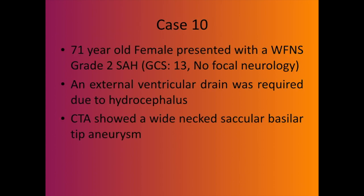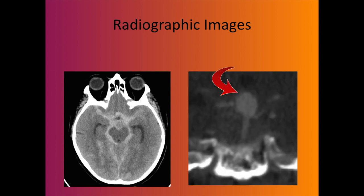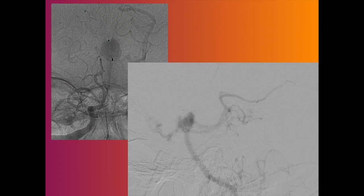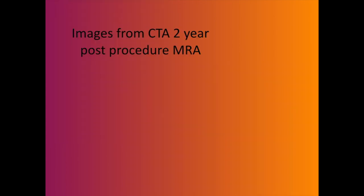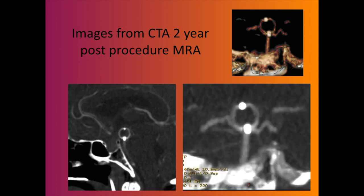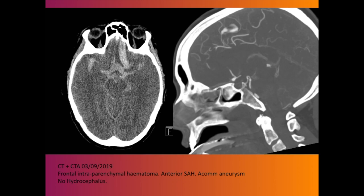On the other hand, for a grade five subarachnoid hemorrhage with a wide neck aneurysm, if you have a WEB you can drop it into the aneurysm and achieve complete occlusion at two years with no flow within the aneurysm — really pretty good. The technology keeps getting better: a young lady with an ACoM aneurysm, slightly irregular shape, but managed to drop WEB in and achieve complete occlusion.